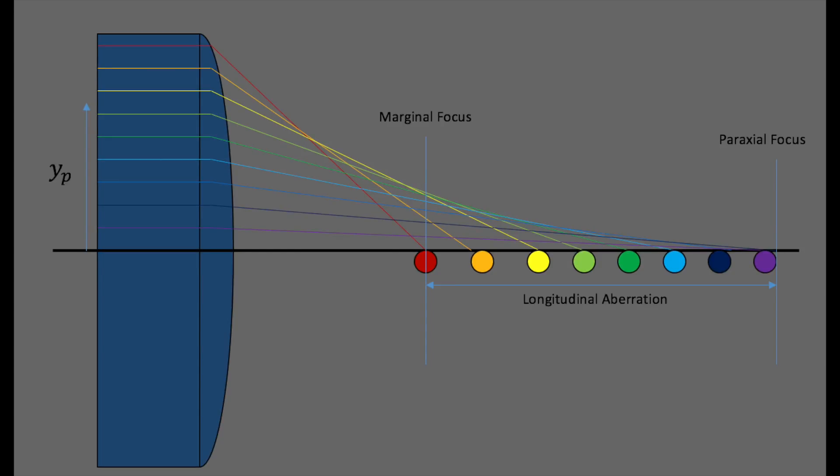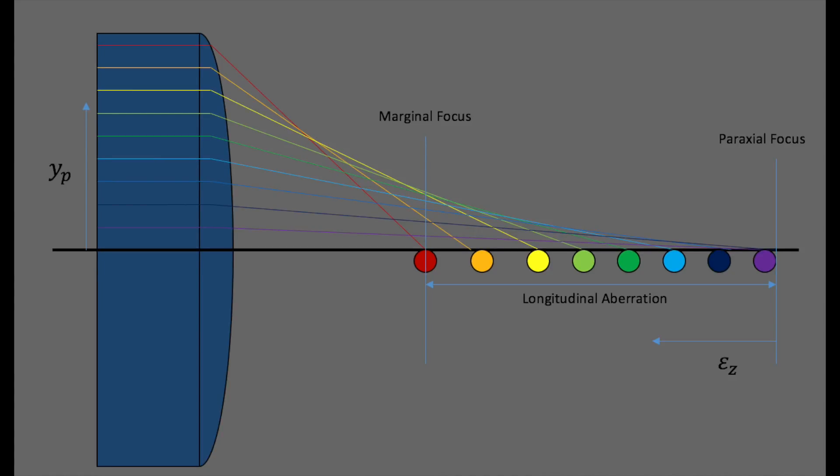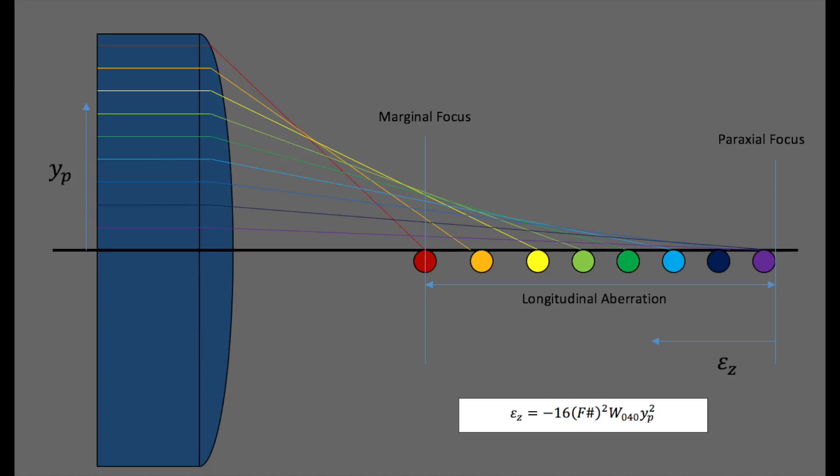The distance between the marginal and paraxial focus is known as the longitudinal aberration. The longitudinal ray errors are measured from paraxial focus and are quadratic with respect to the incident pupil coordinates.